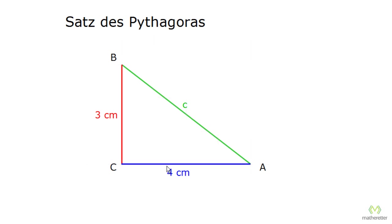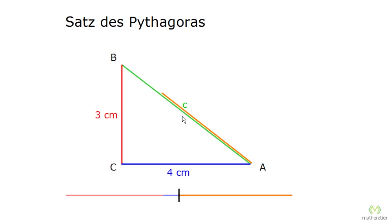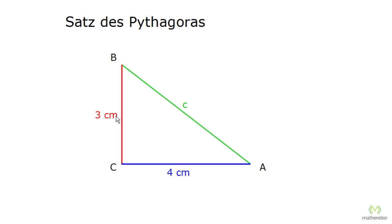We can try to combine three and four centimeters together in some way — for example, by adding, then you would have seven centimeters, but that is much too long compared to side C. You could also try cutting them in half, but that is much shorter than side C. You will soon find that by adding, multiplying, or subtracting the two sides from each other, you cannot arrive at side C.